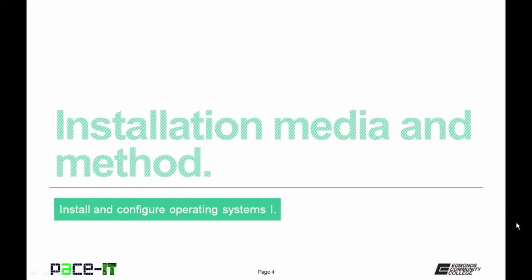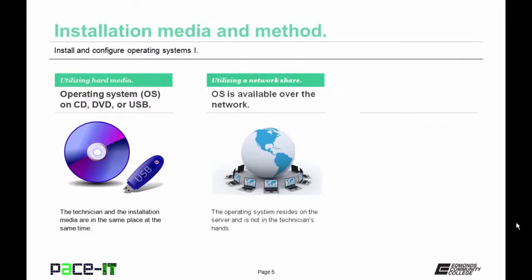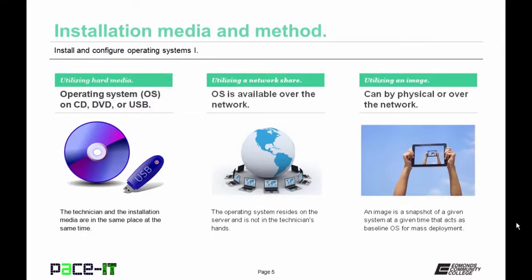We begin with installation media and method. For installation media, the first option is hard media — think CD-ROM, DVD, USB, portable hard drive, and so forth. Another type is a network share, where the operating system is available over the network and the media is not in the technician's hands. Finally, you can use an image — which can be on physical media or over the network. A base or preferred operating system has been created and stored in a file; this is best for mass deployment.